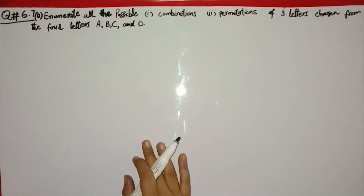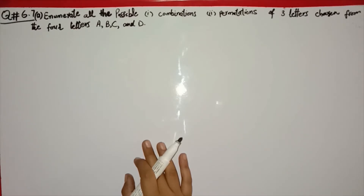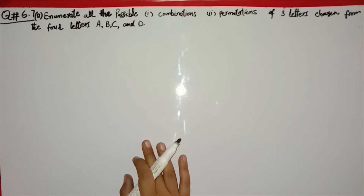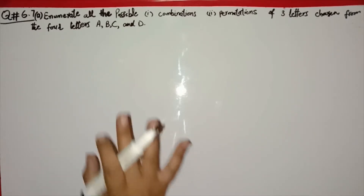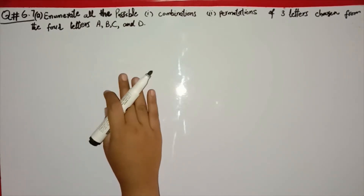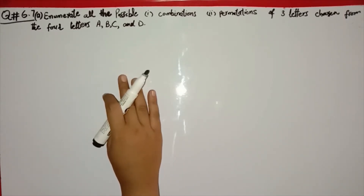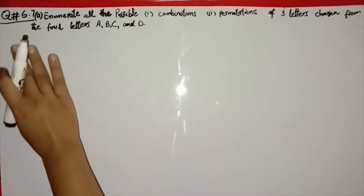We are starting to solve probability theory from the book 'Introduction to Statistical Theory, Part One.' Chapter number six is probability theory, and we will solve the exercise objective part, beginning with question number seven.